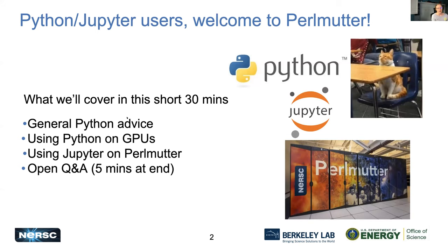So what we're going to try to cover here is general Python advice. A lot of this will apply to both Cori and Perlmutter. We're going to talk about using Python on GPUs, a topic many of you are curious about. We'll talk about using Jupyter on Perlmutter, and we're going to try really hard to leave about five minutes at the end for an open Q&A, so this would be a good opportunity for you to ask us questions.